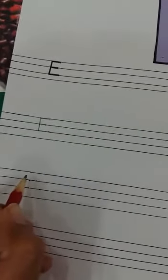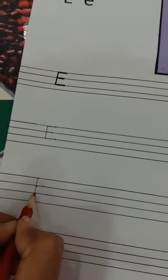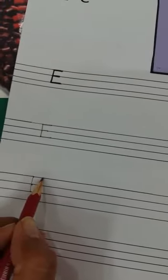Capital E. Start from the top and draw a standing line down. Go again to the top and draw a slipping line to the right.